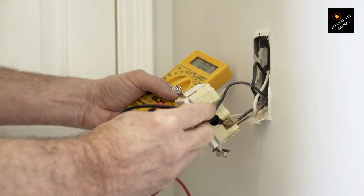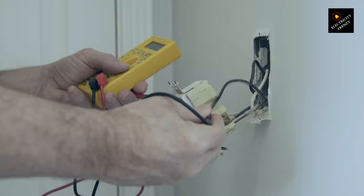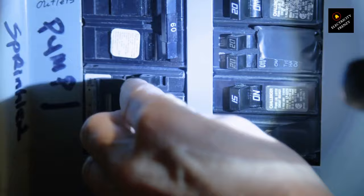Number seven: Low voltage or voltage drop. Insufficient voltage supply or voltage drop in the electrical system can cause the dishwasher's motor to draw more current, potentially exceeding the breaker's capacity and leading to a trip.